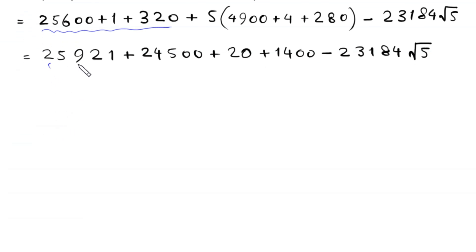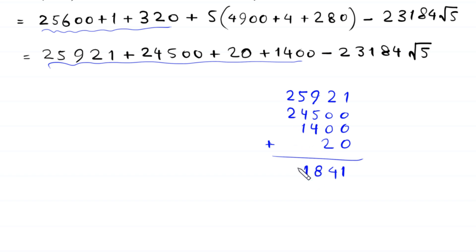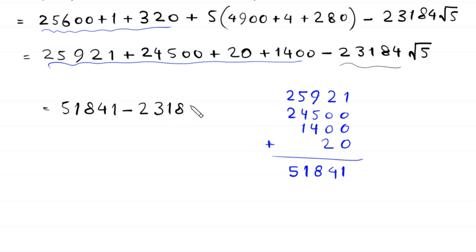Adding these numbers together: 25921 plus 25920 equals 51841. So the final answer of this problem is 51841 minus 23184 times root 5. This is the simplest form and the final answer.